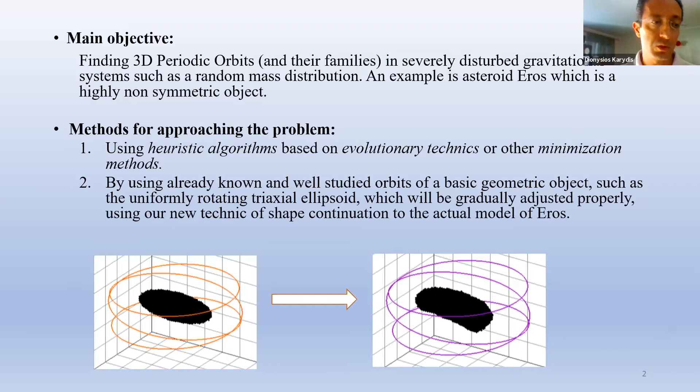Such a method is the particle swarm optimization which is based upon the way in which a flock of birds flies in synchronization with each other. A second way would be by using analytic methods on a simple geometric object and then implementing a shape continuation technique to simulate eventually the dynamics of a more complex body.